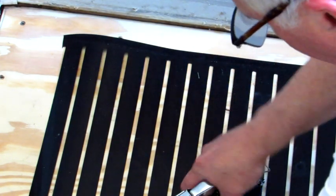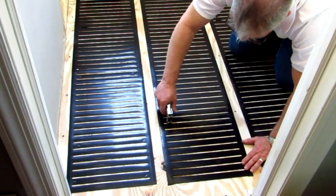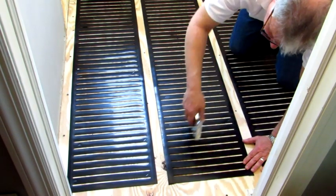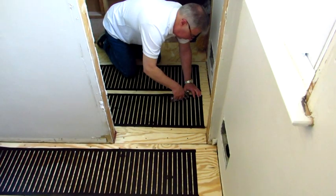When on a plywood subfloor, we recommend you use a staple gun to secure the heating element to the floor. If your subfloor is concrete, you can use duct tape to hold the heating element in place before you thin-set your tile.